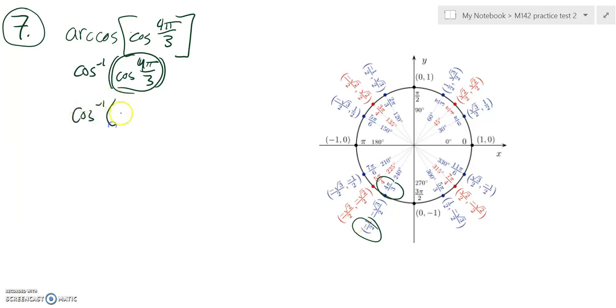So inverse cosine of negative 1 half is what we're going to find. Now, it feels like it might be 4 pi over 3 right back out. But remember, inverse cosine as a function only returns values in the first and second quadrant.